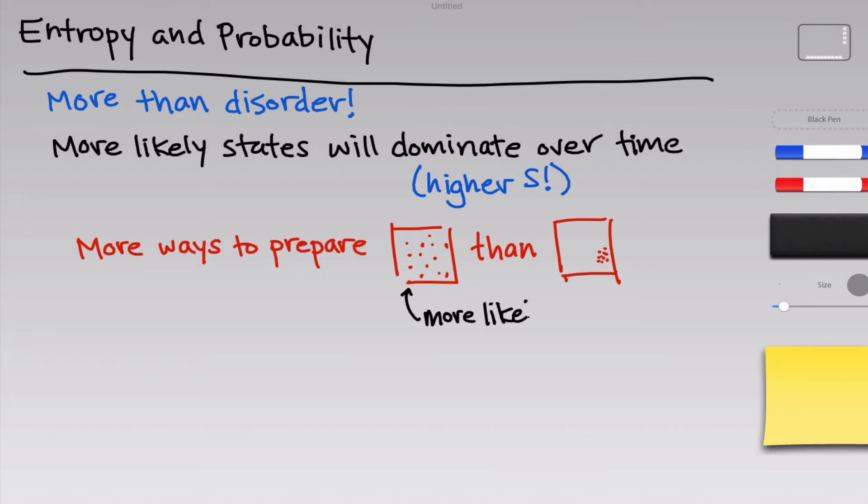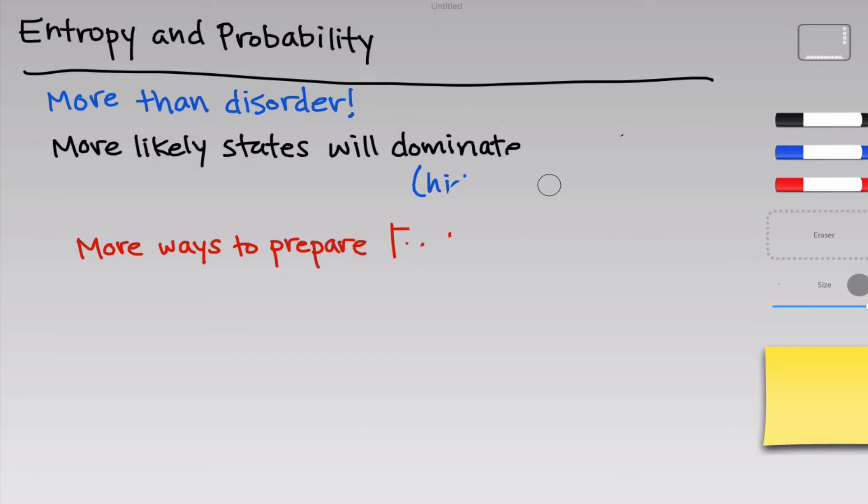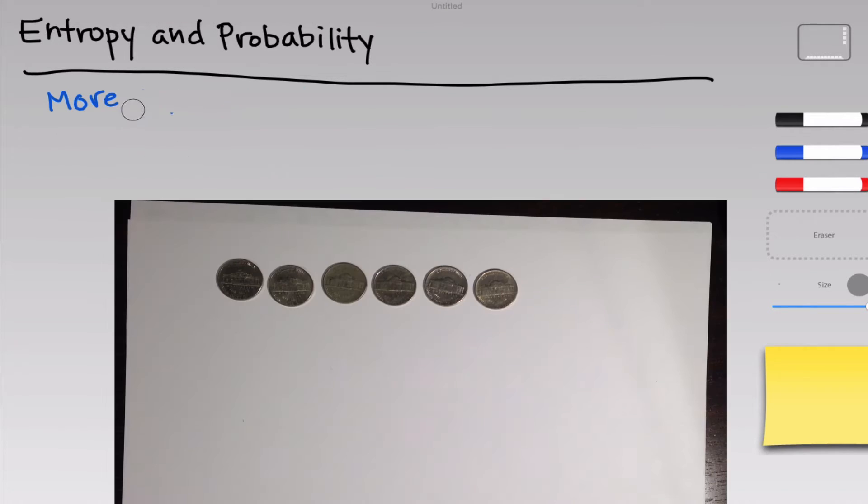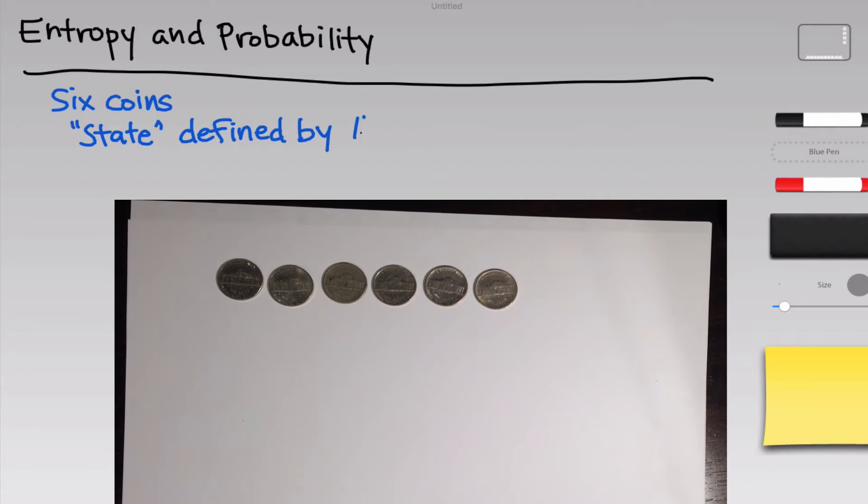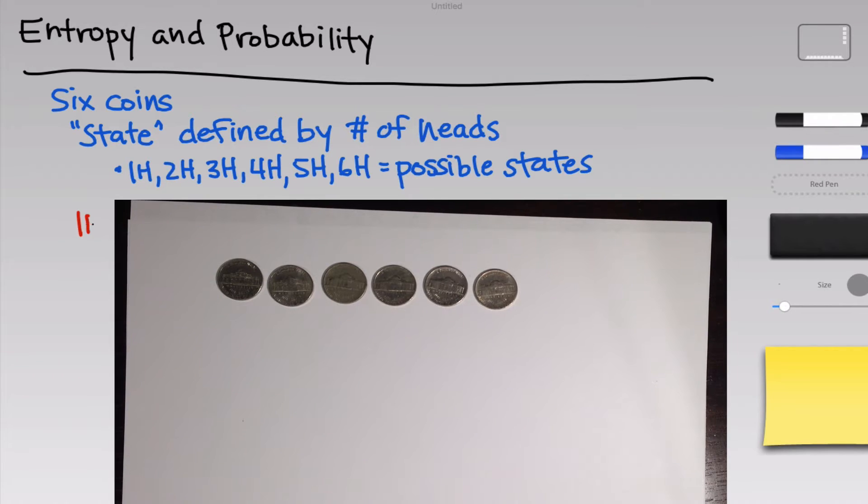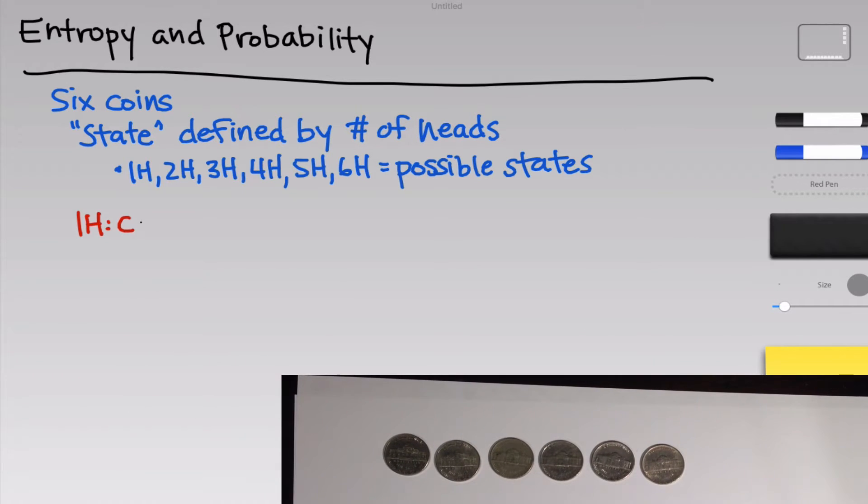To see how this works, we can make an analogy to a set of coins. I have here six nickels, and let's think about two possible states for this collection of six nickels. Let's imagine we're defining our state by the number of heads that we see, irrespective of where the heads show up. So, one head is a state, two heads, three heads, four heads, five heads, six heads are all different possible states of this system. Let's look specifically at the one head state versus the three head state.